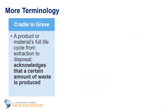Now let's talk about some more terminology often used when talking about the embodied environmental impact of buildings. When we talk about the life cycle of a product — in this case, a building — we use the term cradle to represent the beginning of the life cycle and grave to represent the end. Therefore, the term cradle to grave refers to a product's full life cycle from extraction to disposal. In cradle to grave, some or all materials are disposed of in a landfill, otherwise known as the grave, so some amount of waste is produced. Cradle to grave analyses are the basis for life cycle assessments, or LCAs, which we will learn more about later in this episode.